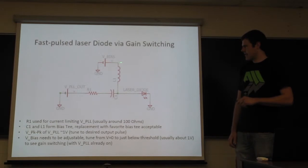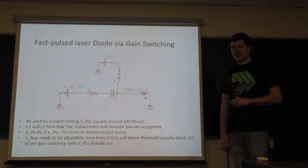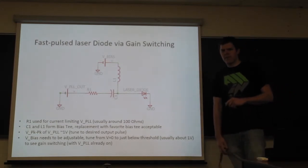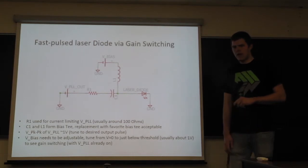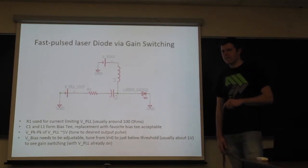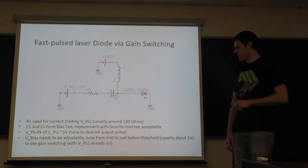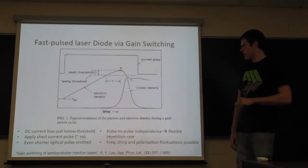DC bias is used to provide some injection, some current carriers into the diode, and then this RF signal allows you to bring the diode over the lasing threshold, and then back under, to achieve this current pulse here.